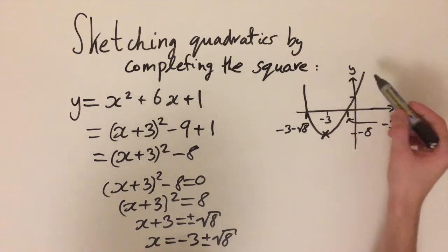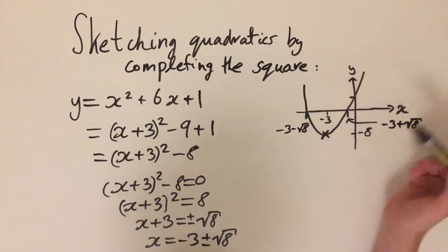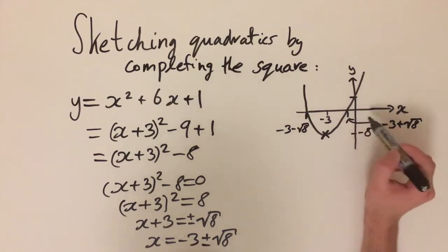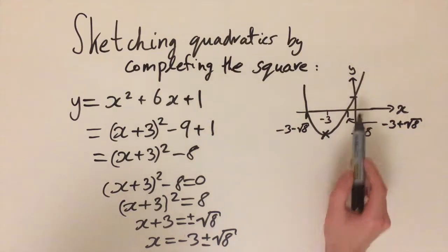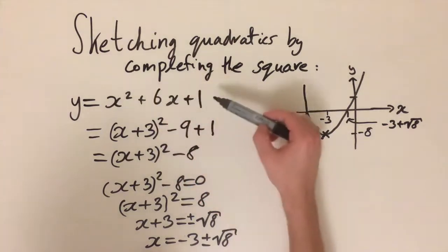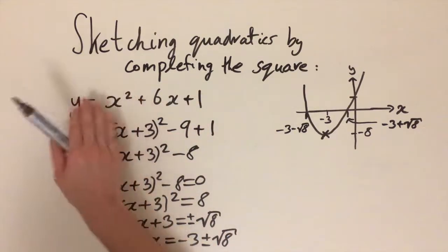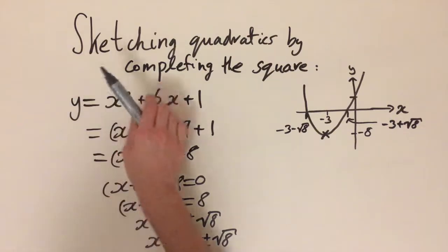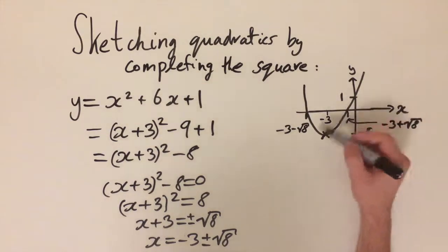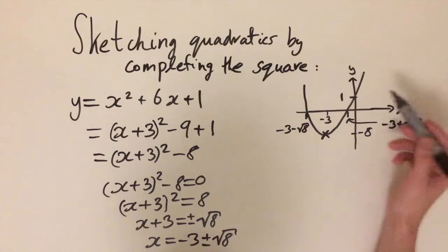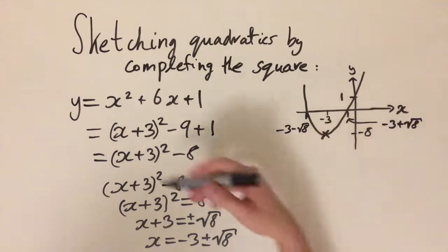We've worked out the x-intercepts and the minimum. All that's left is the y-intercept, which is the point where x = 0. Going back to the original equation and setting x = 0, the x² and x terms disappear and we're just left with the constant at the end, giving a y-intercept of 1. We now have all the information we need: the minimum, x-intercepts, and y-intercept — and that's everything you need to know about sketching a quadratic curve.